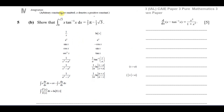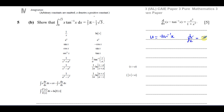The integration by parts formula is given in the formula sheet: the integral of u dv/dx dx equals uv minus the integral of v times du/dx dx. We must choose u — the part we differentiate — to be inverse tan of x, and dv/dx — the part we integrate — to be x.